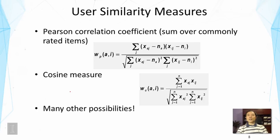This basically measures whether the two users tend to give higher ratings to similar items or lower ratings to similar items.